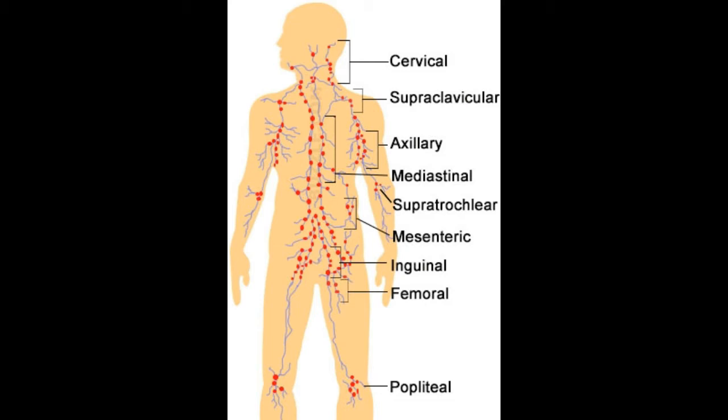Lymph nodes are small bean-shaped organs of the lymphatic system. The lymphatic system circulates the interstitial fluid called lymph to the body cells and tissues. It also collects waste substances from the bloodstream. Lymph contains white blood cells (WBC) as its major components and is more or less similar to the body's blood plasma. Lymph nodes are made up of various types of cells and tissues, of which WBC and lymphoid tissues are more abundant.